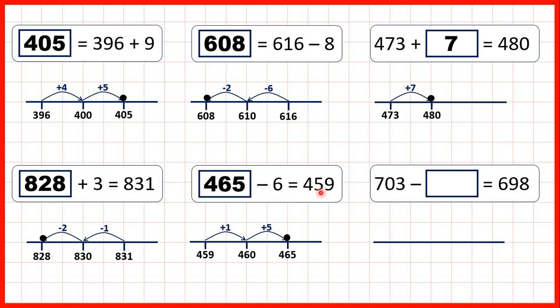So now 703 minus something equals 698. Because it's the second number of our subtraction that's missing, one way to find our missing number would be to work out 703 minus 698. But like up here, because the numbers are close to each other, it's probably easier for us to start at 703,